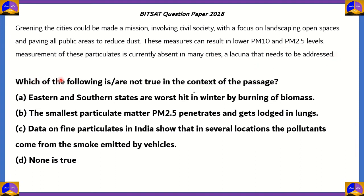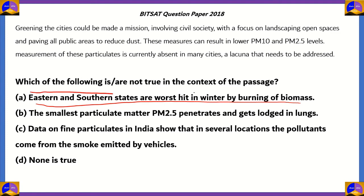The question is: which of the following statements is or are NOT true in the context of the passage? Statement one: eastern and southern states are worst hit in winter by burning of biomasses. Statement two: the smallest particulate matter PM2.5 penetrates and gets lodged in the lungs. Statement three: data on fine particulates in India showed that in several locations the pollutants come from smoke emitted by vehicles. Let's examine each statement.